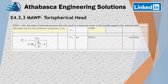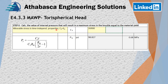In step six we determine a few other interesting variables — specifically, we calculate the value of internal pressure that would result in maximum stress in the knuckle equal to the material yield. We're only allowed to use time-independent properties for the code case. So we set C3 equal to the yield stress found earlier, put C3 into the calculation with the previously determined values, and at the end of the day we get 98.8 PSIG for that internal yield stress value.